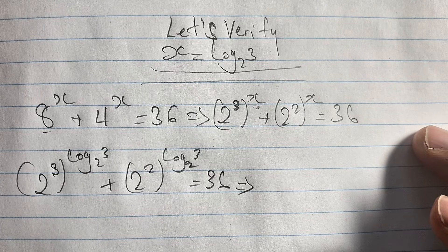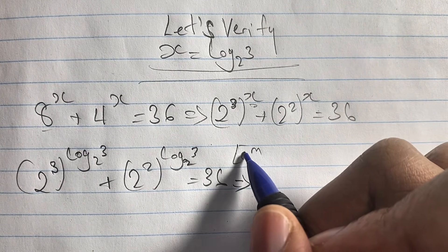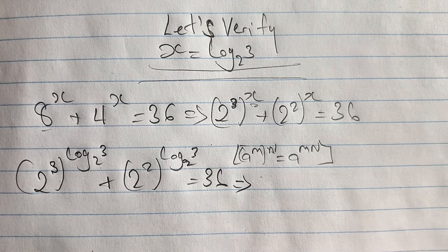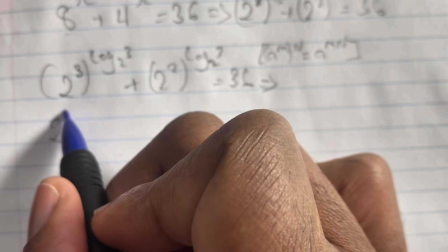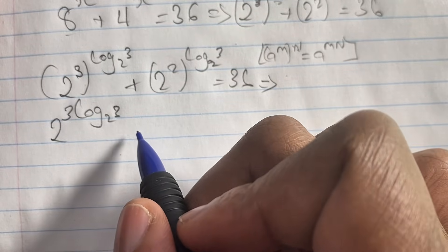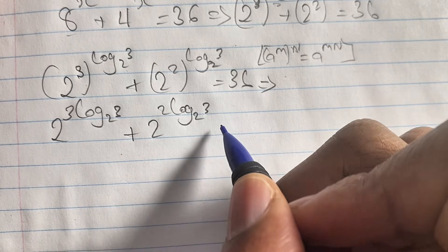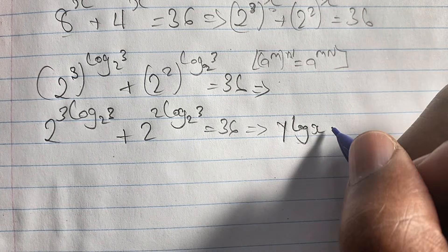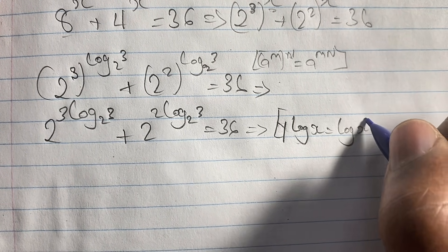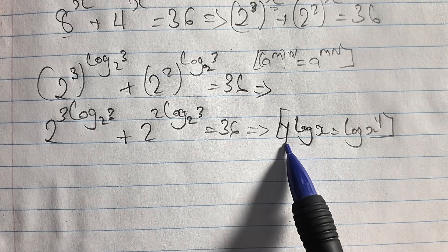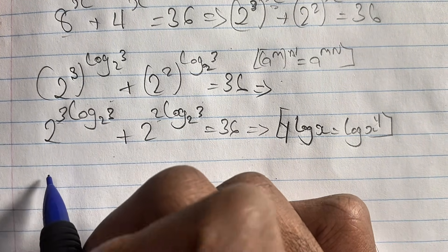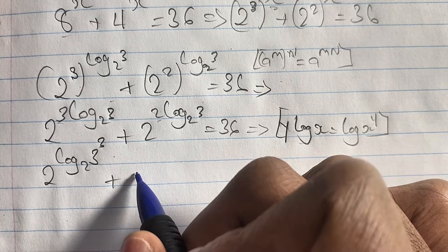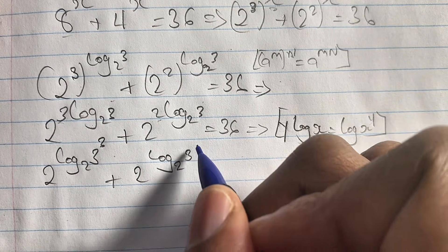Revisiting our exponential rule (a^m)^n = a^(m·n), we rewrite as 2^(3·log₂3) + 2^(2·log₂3) = 36. We then apply the logarithm rule that y·log(x) = log(x^y), so the exponents become log base 2 of 3³ and log base 2 of 3². This gives us 2^(log₂27) + 2^(log₂9) = 36.